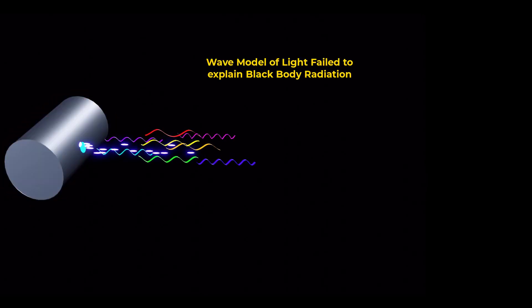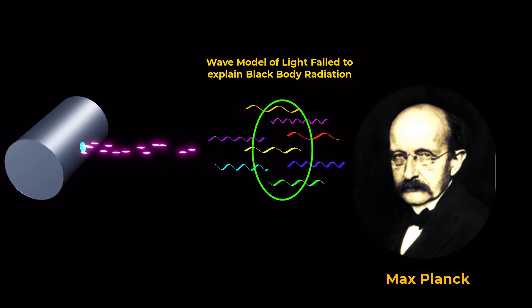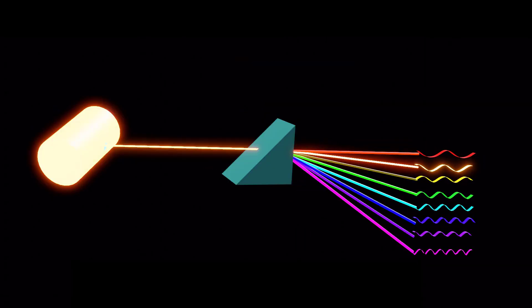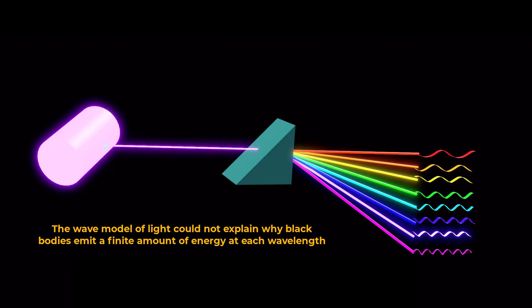However, the wave model faced challenges with Planck's radiation law for black body radiation in 1901. The wave model of light could not explain why black bodies emit a finite amount of energy at each wavelength.